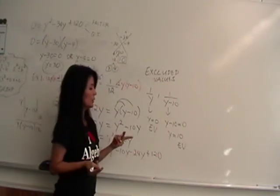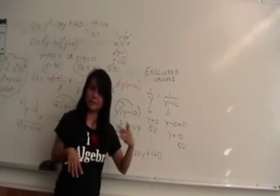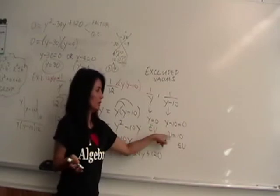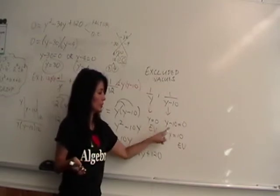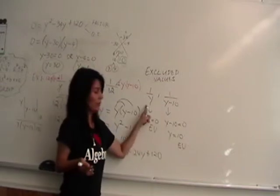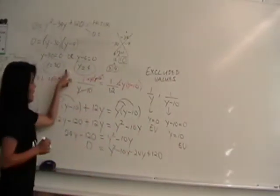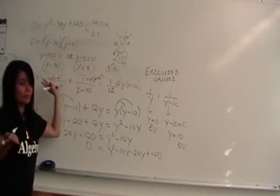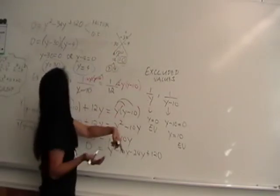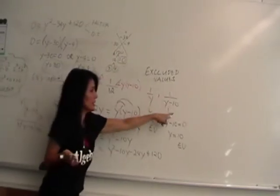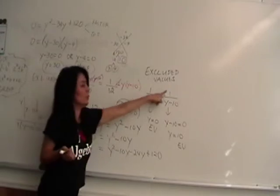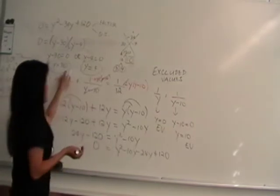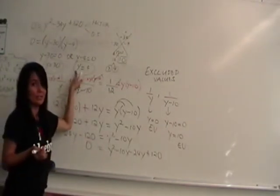We're not allowed to substitute 0 or 10 for y. Fortunately, the two answers we got are 30 and 4, which are not excluded — we like them. 1/30 is fine, 1/(30 minus 10) is fine, 1/4 is fine, 1/(4 minus 10) is fine. They're not undefined. So these are the valid answers for this rational equation.